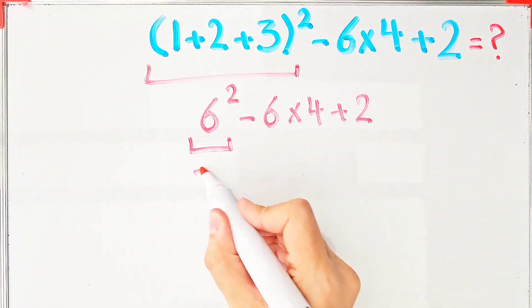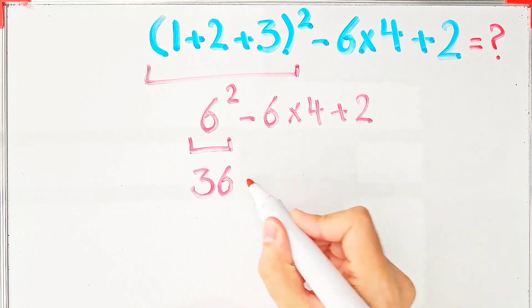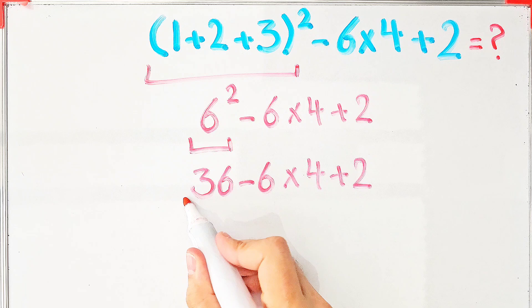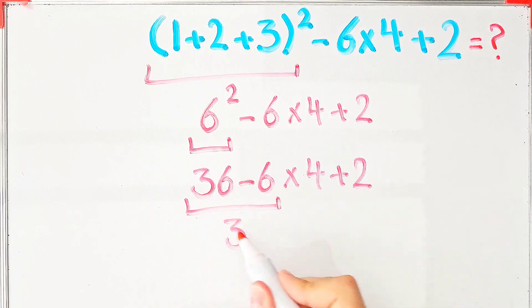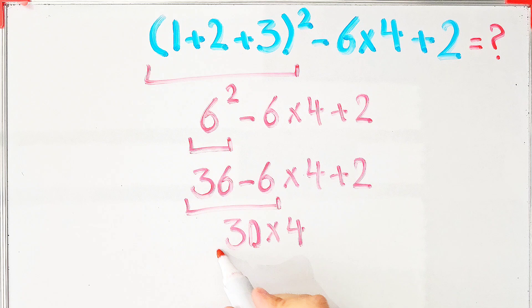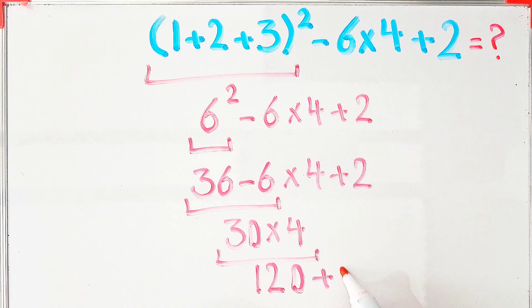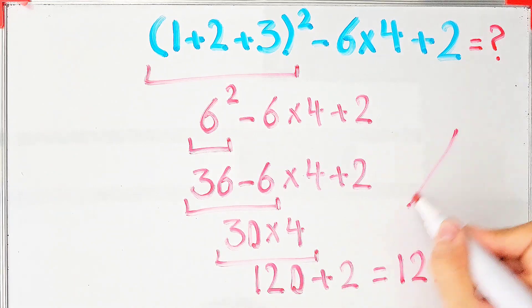36 - 6×4 + 2. 36 - 6 equals 30, 30×4 then plus 2. 30×4 equals 120 and 120 + 2 equals 122. But this answer is definitely wrong.